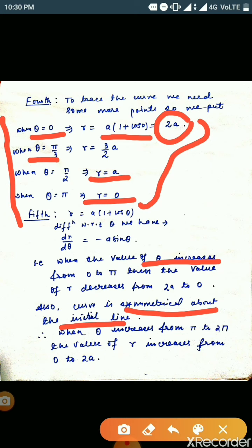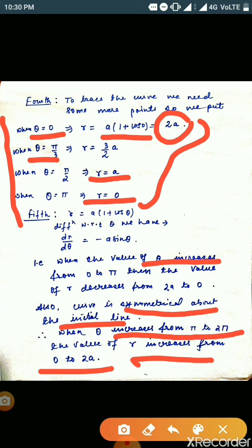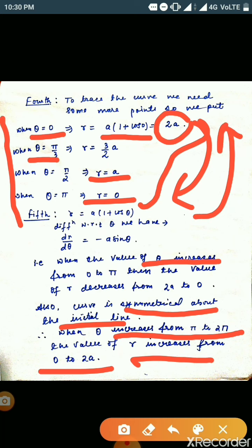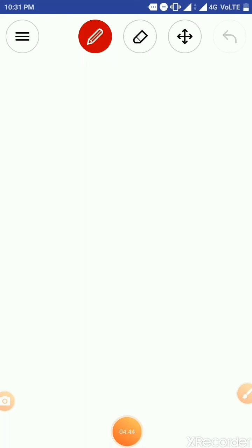When θ increases from π to 2π, r increases from 0 to 2a. That means first the points decrease from 2a to 0, and then when we move from π to 2π, the value of r increases from 0 to 2a. So in both the lower and upper parts, the value reaches up to a distance of 2a.